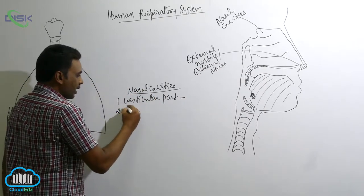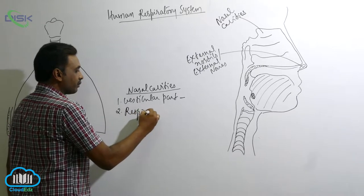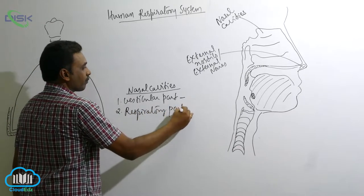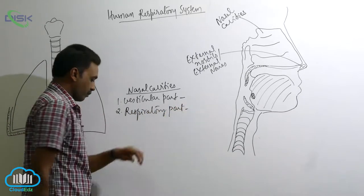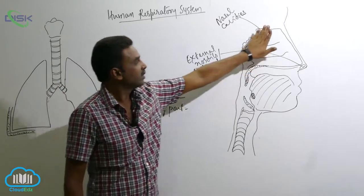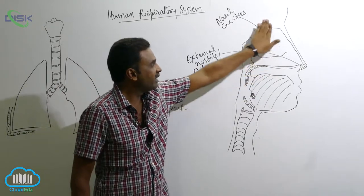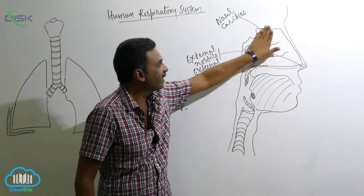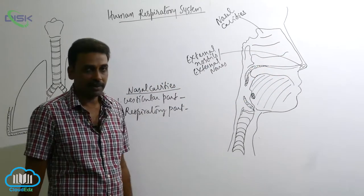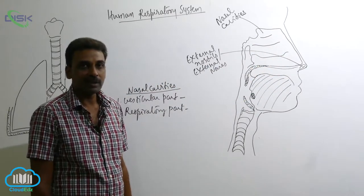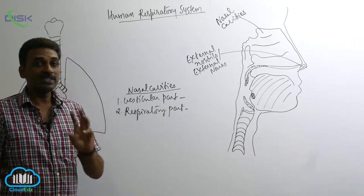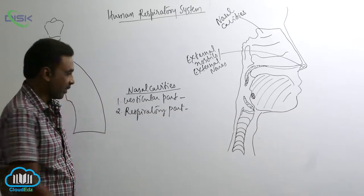Followed by the respiratory part — the middle area is called the respiratory part. The respiratory part contains three twisted bones called conchae.